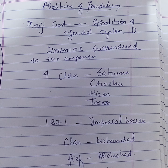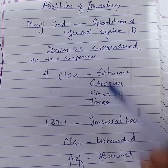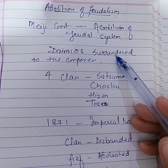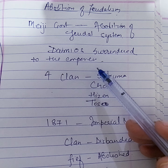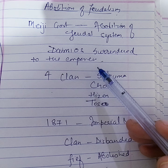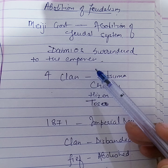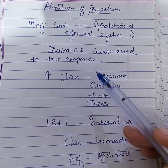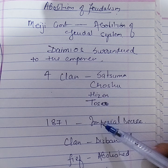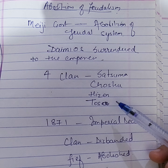The first important achievement of Meiji rule was the abolition of the feudal system. In 1869, the chiefs of the four powerful clans — Satsuma, Choshu, Hizen, and Tosa — surrendered their positions as territorial magnates and offered to the Emperor the registers of their land and people. By a remarkable act of patriotism, the other feudal lords, the chief daimyo, also surrendered their respective feudal rights and positions, and the lesser nobles followed their example.